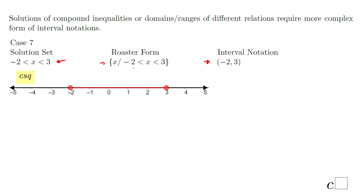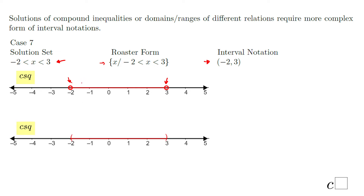The graphical approach: you notice two empty dots, one at negative 2 and one at 3, and shaded between — that is the solution set in graphical form. This is another way to see it: instead of empty dots, you will have parentheses.